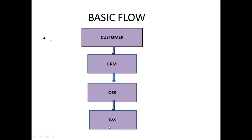The third block is BSS — Billing Support System. In this billing support system, according to the service which is required by the customer (entered through CRM and activated through OSS), the bill is generated. According to the service activated for a particular customer, what usage they have used for those services is calculated according to a rate card or charge, and a particular bill is generated. This is the BSS, that is, the Business Support System.